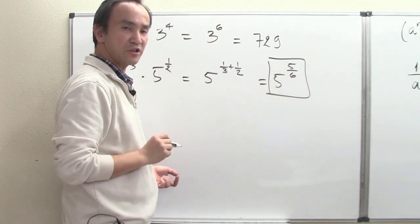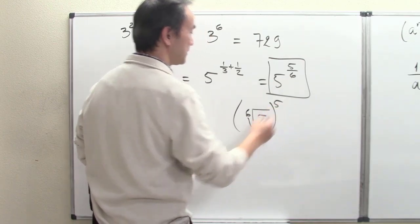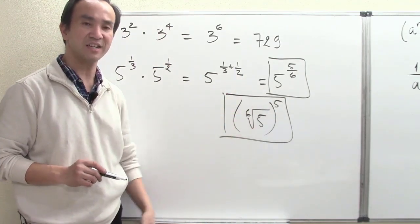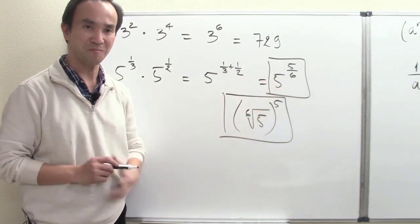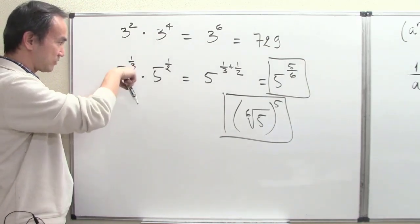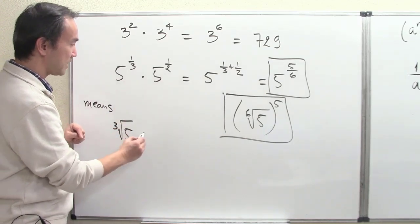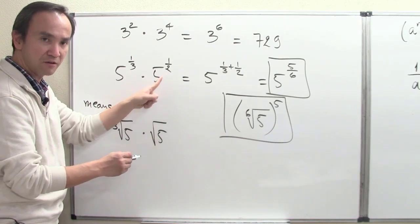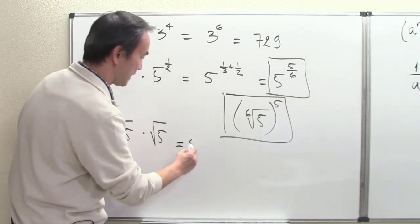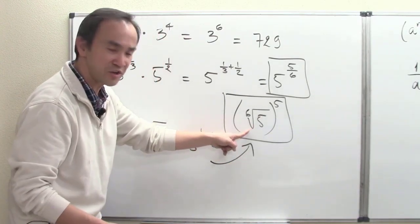We can leave that in rational exponent form, or think of it as the sixth root of 5 raised to the fifth power. The problem shows that sometimes the same expression can be written as the cube root of 5 times the square root of 5, because of the rational powers of 1 third and 1 half. All of that work equals 5 to the 1 third plus 1 half, which is the only way to eventually combine it all into one root or rational expression.